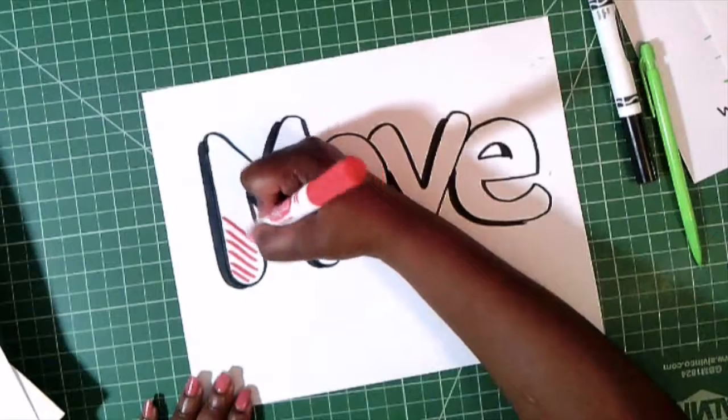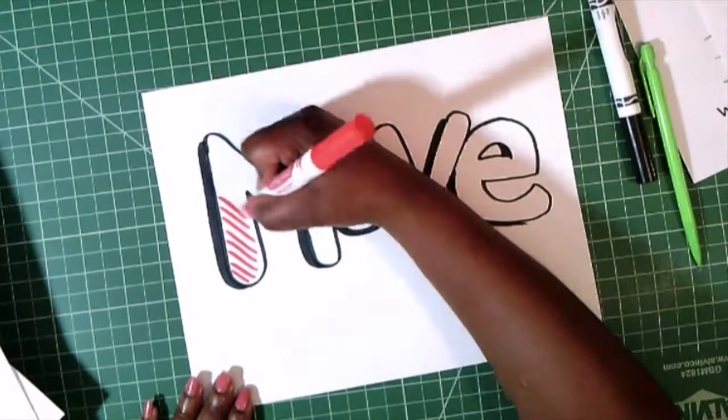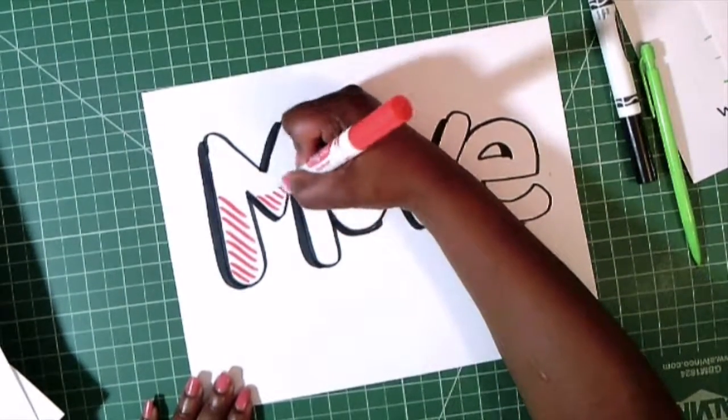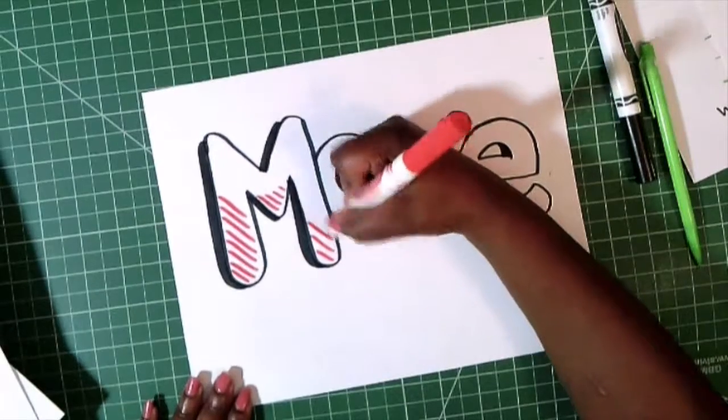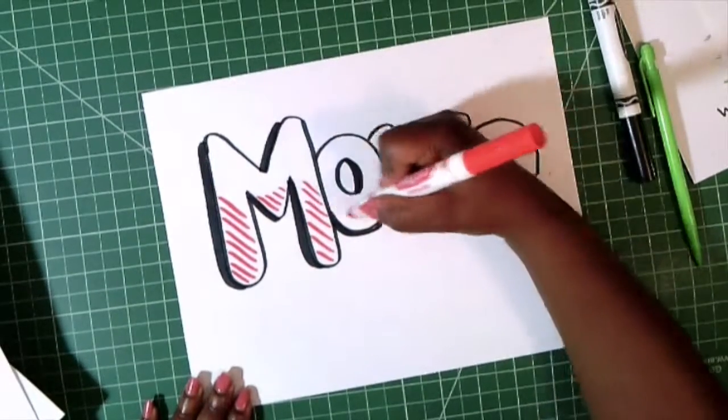I'm just going to use some diagonal lines. You could actually color it all the way in. For the sake of keeping this video short, I will not be coloring my word move all the way in.